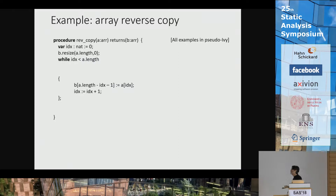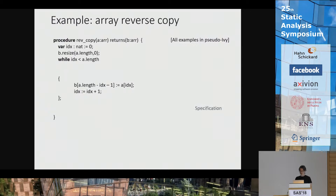Let's start with a simple example showing these issues in action. I'm going to do a textbook-style proof of a procedure that takes in an array and returns a reversed copy of it. In the middle of the procedure there's a loop over the indices of the array that sets b of length minus index minus 1 equal to a — it's reversing the order of the array. To prove this correct, I first have to write a specification saying the length of the output equals the length of the input, and for all indices, b of length minus j minus 1 equals a of j. I also need an inductive invariant, which will look very similar.